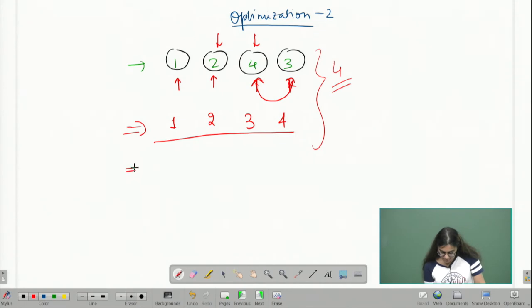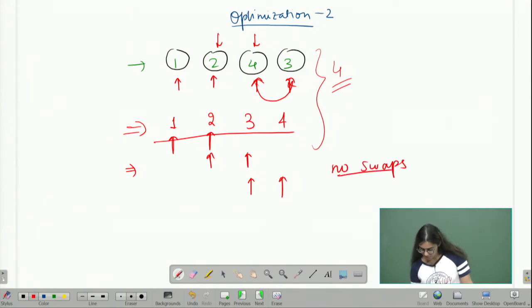Let us see how we can optimize this. When I run another iteration on this array, I do not need to swap 1 and 2, I do not need to swap 2 and 3, and I do not need to swap 3 and 4. Since the array was already sorted, all the relative positionings are correct. In the second iteration, I will see that there are no swaps required. If there are no swaps required between any pair of adjacent elements, I can say that the array is sorted and I do not need to run any further iterations.